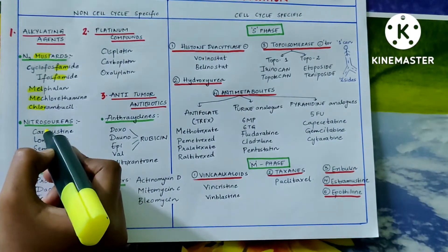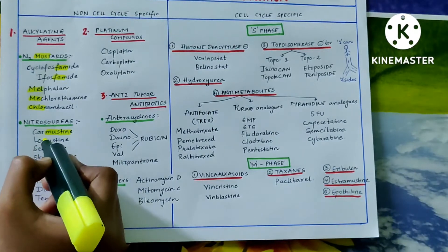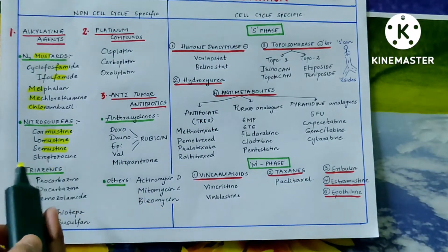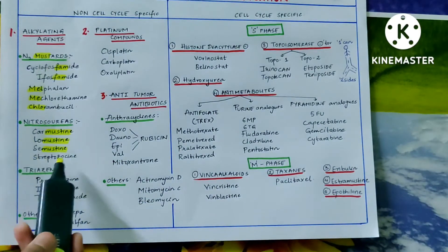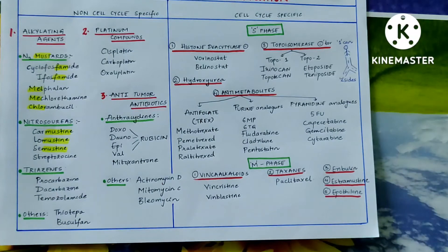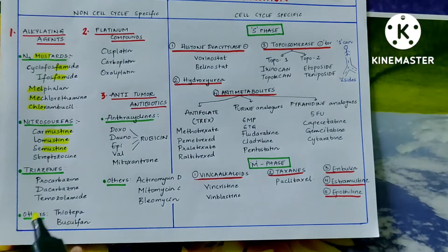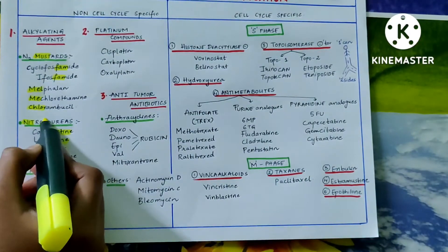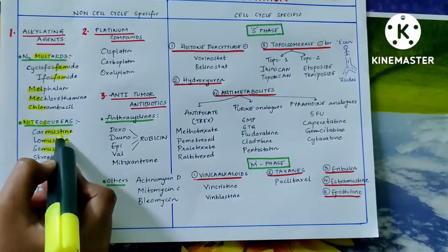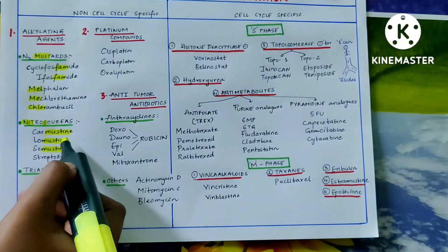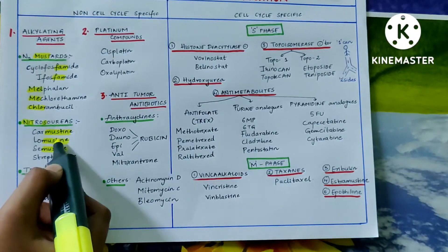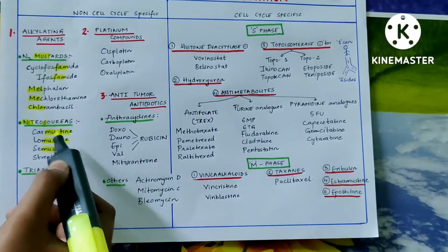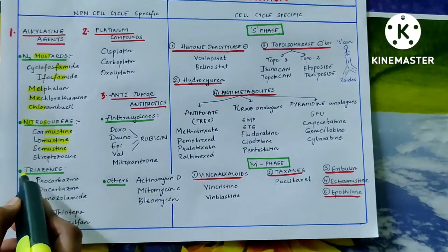Now, nitrosoureas: urea occurs in a tin — carmustine, lomustine, semustine. The 'tin' is highlighted in their names. Alternatively, remember that in the name nitrosourea, the letters S-T-I-N are hidden in reverse order, and those same letters S-T-I-N appear at the end of each drug name.